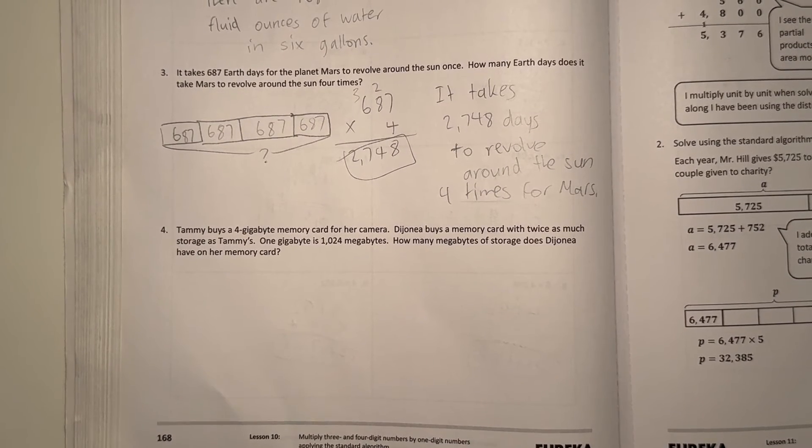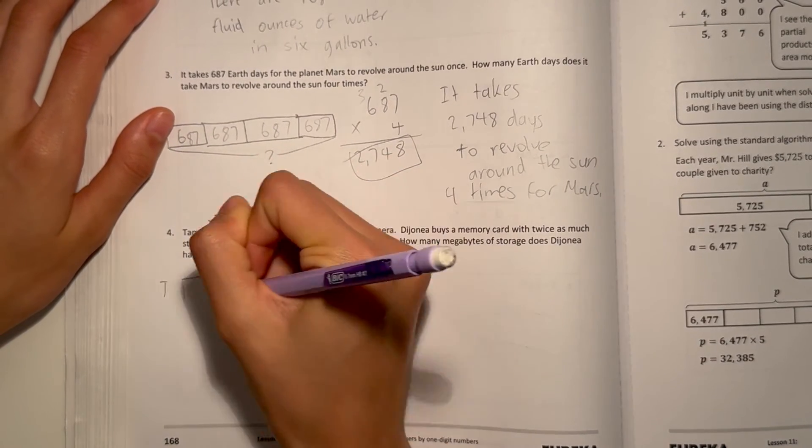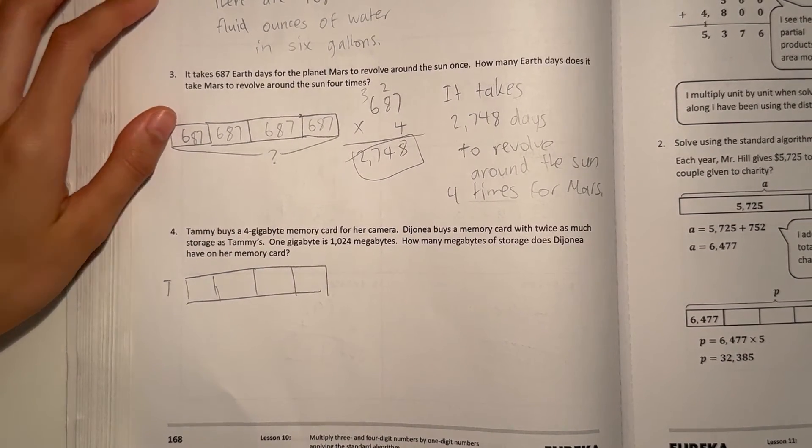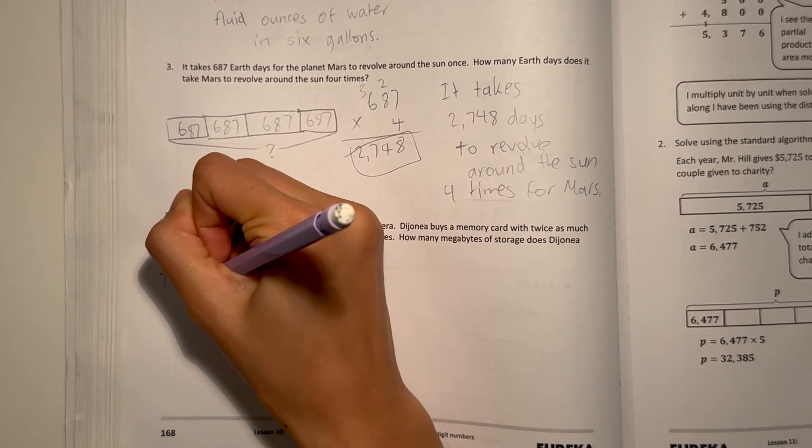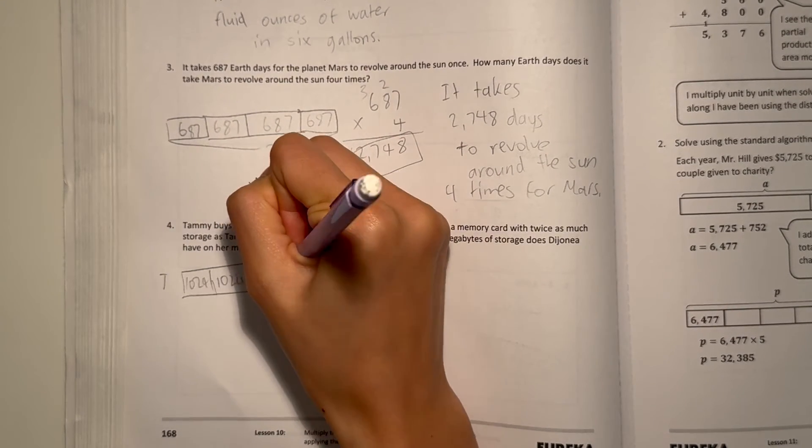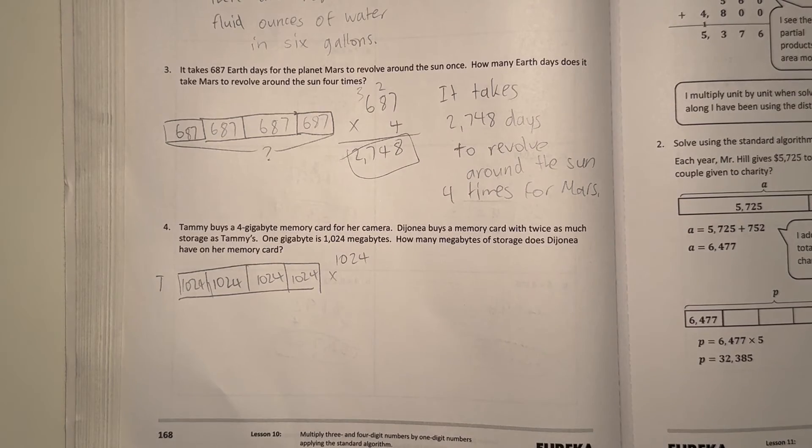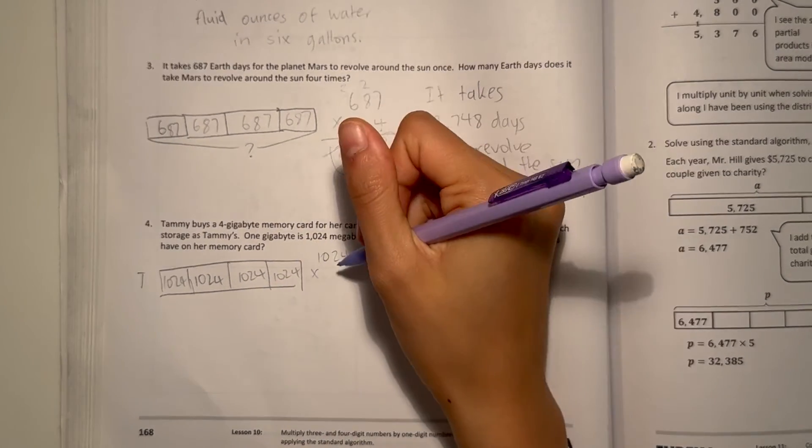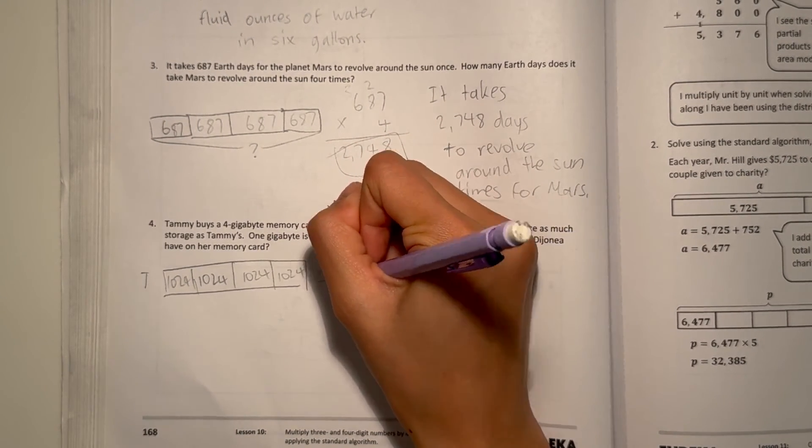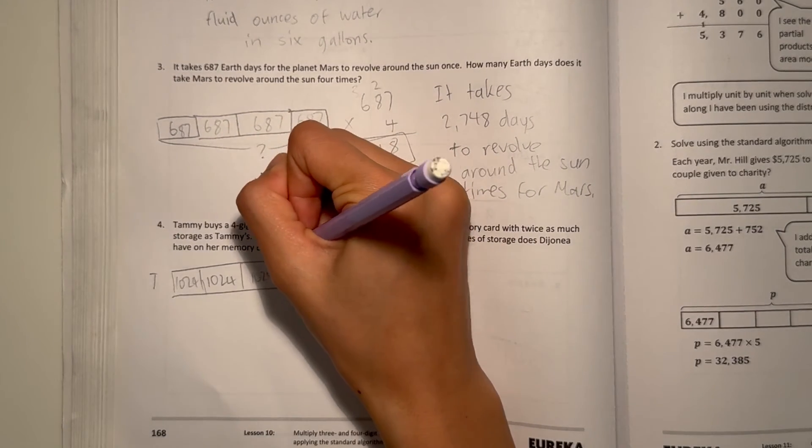So let's say Tammy. T for Tammy. Tammy has 4GB memory card. And each gigabyte is 1024MB. So let's find out how much MB Tammy has. So 1024 times 4, because she has 4GB. 16, 2 times 4 is 8, plus 1 is 9, 0 and 4. 4,096. That's how much Tammy has. You can just write that above.